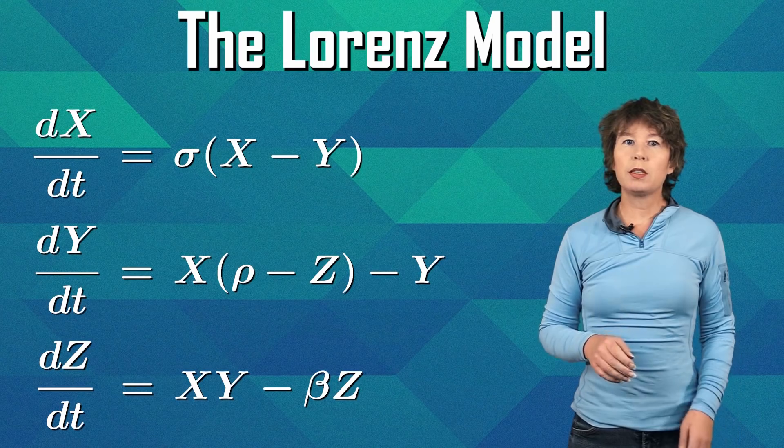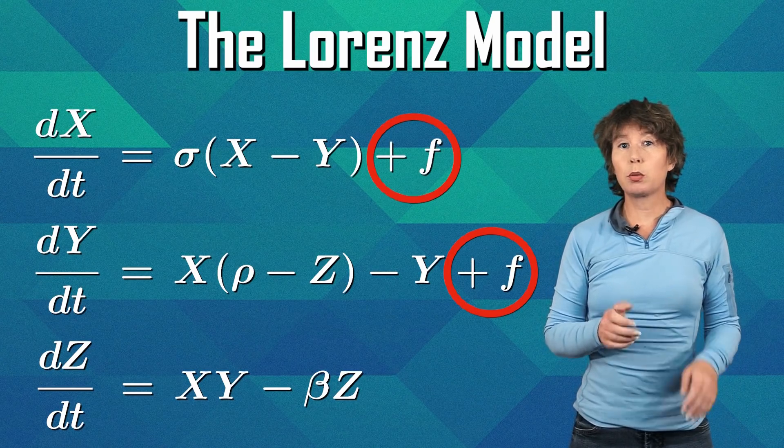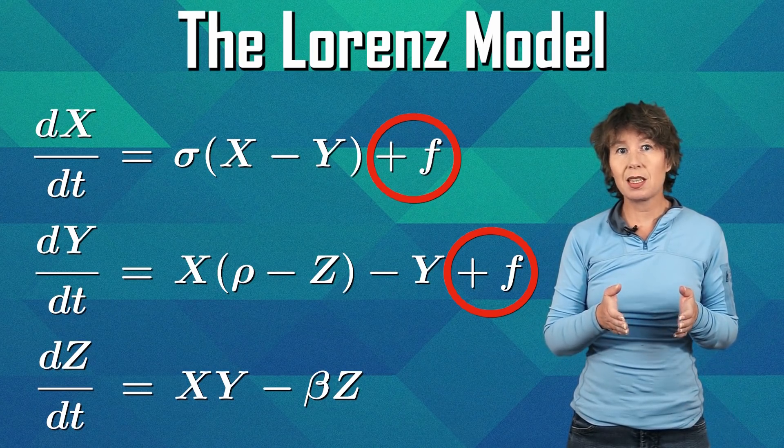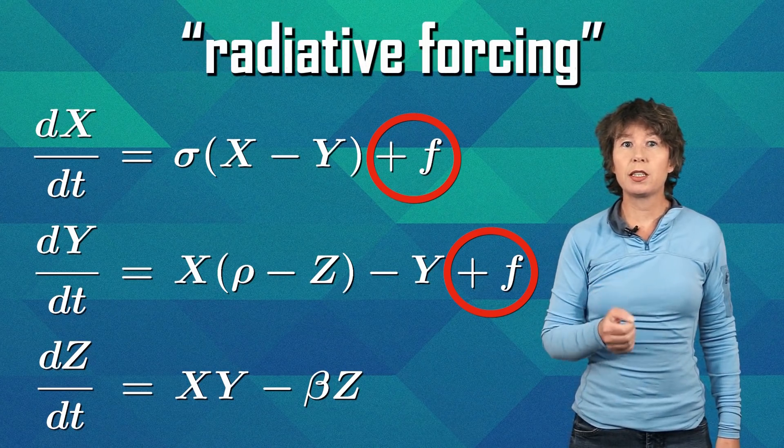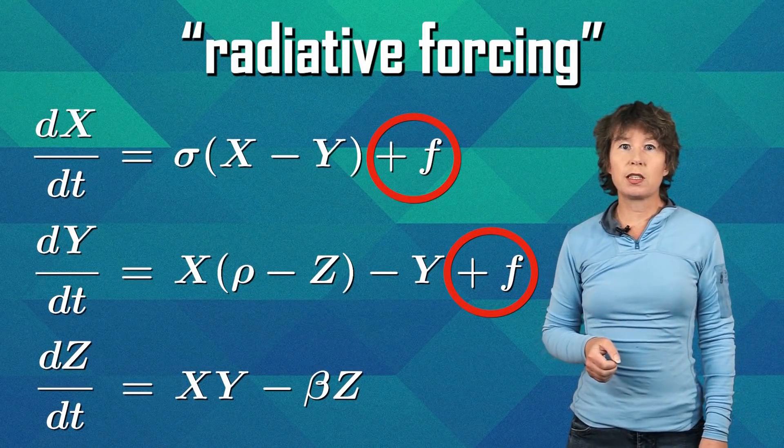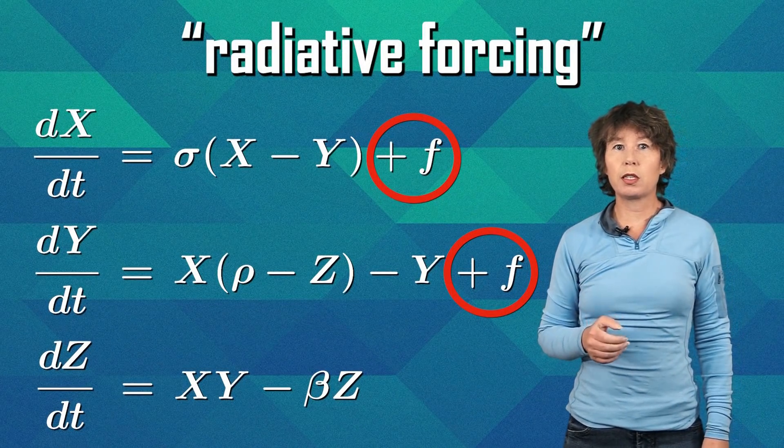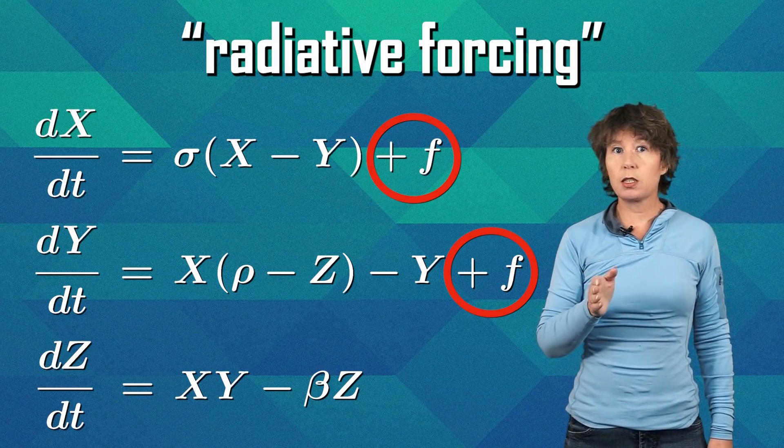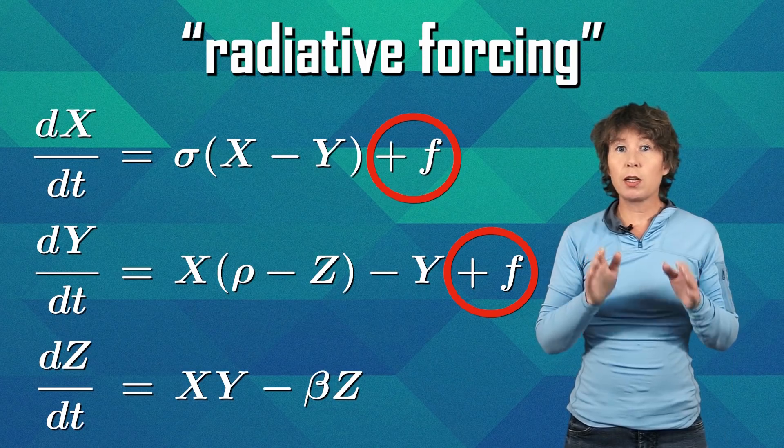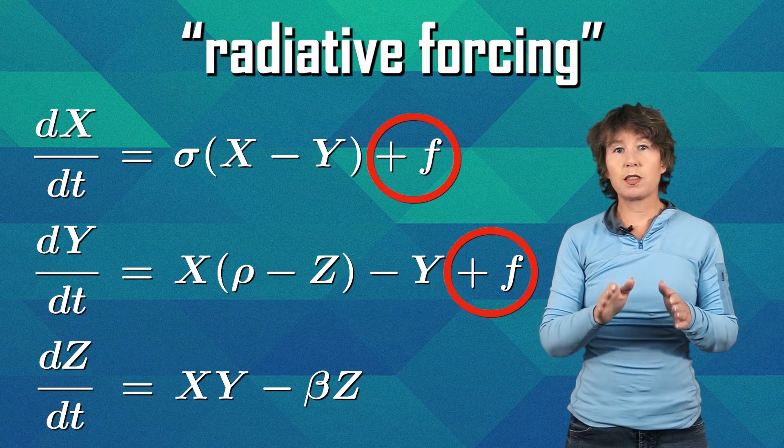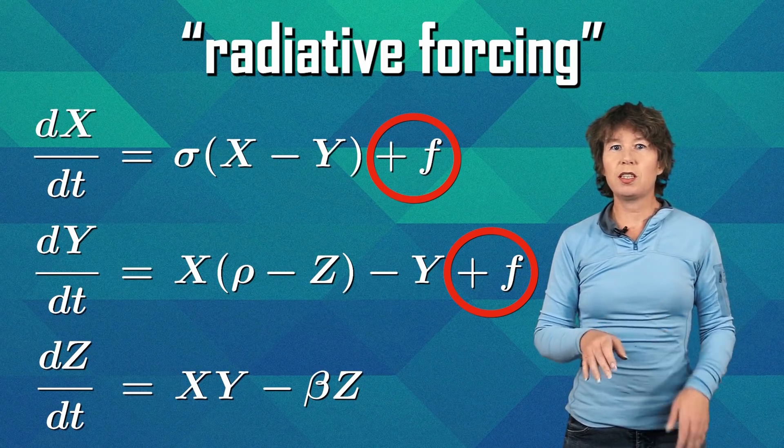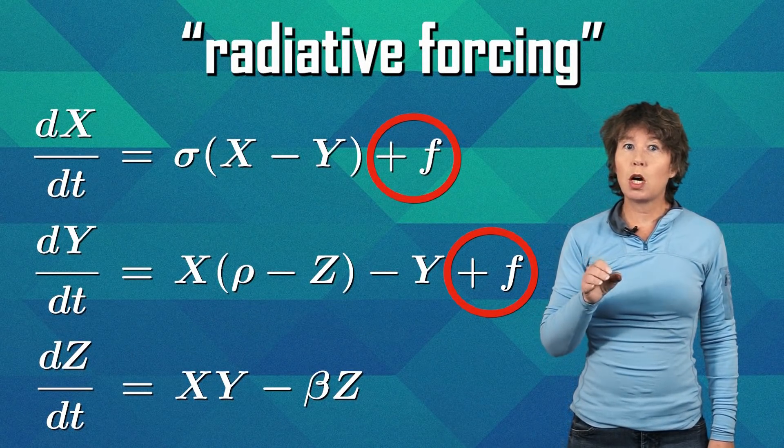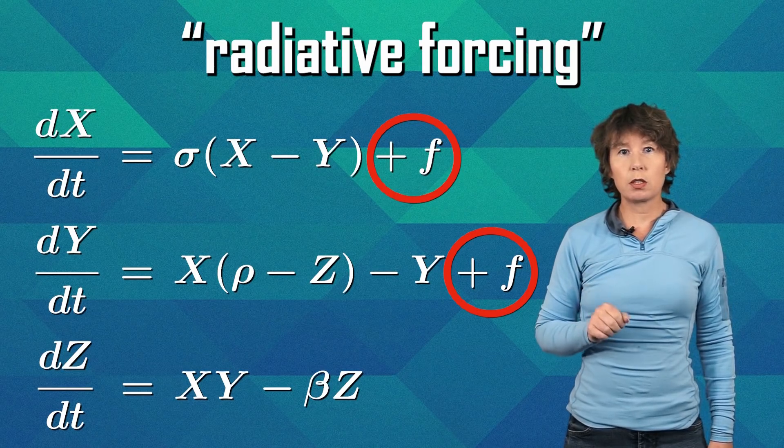What I will do now is add a constant to the equations of the Lorenz model. I will call this constant F and it mimics what climate scientists call radiative forcing. The radiative forcing is the excess power per area that Earth captures due to increasing carbon dioxide levels. Again, that's relative to a reference value. I want to emphasize again that I'm using this model only as an analogy. It does not actually describe the real climate. But it does make a good example for how to make predictions in chaotic systems.